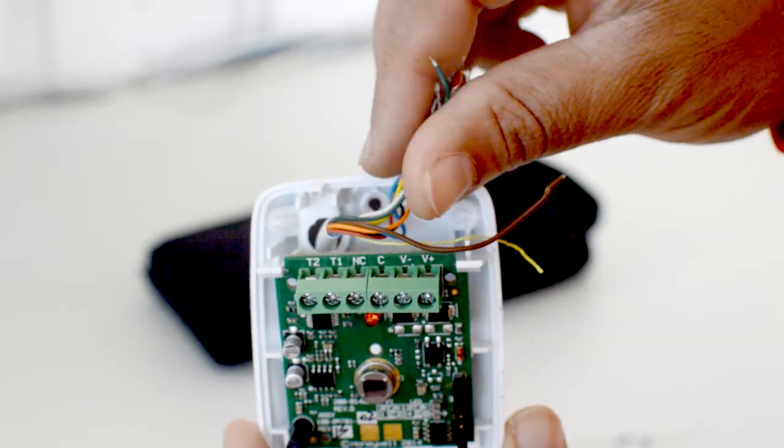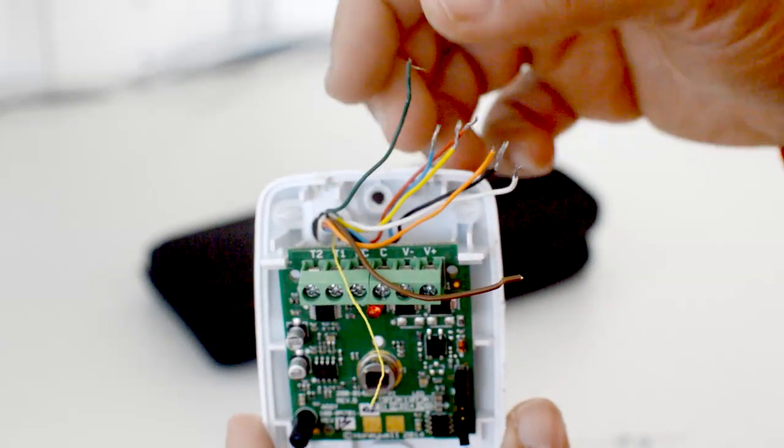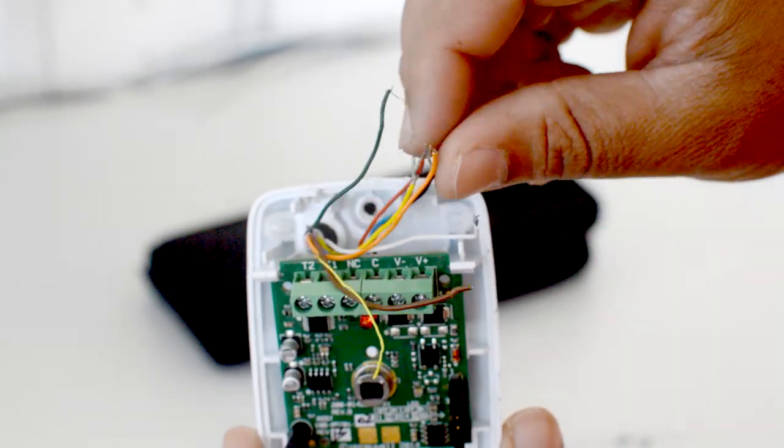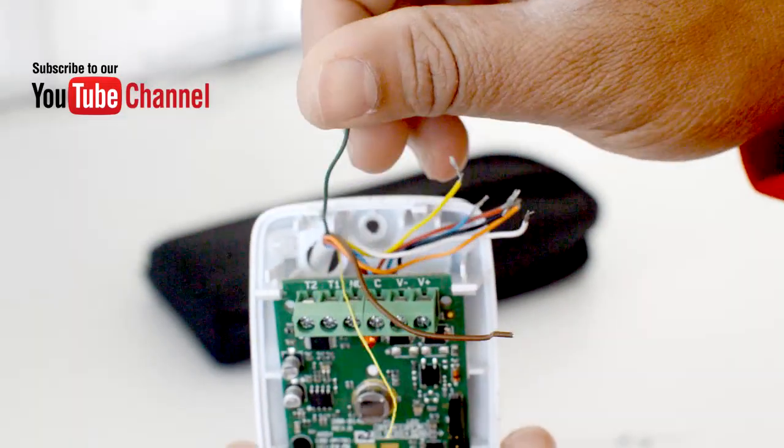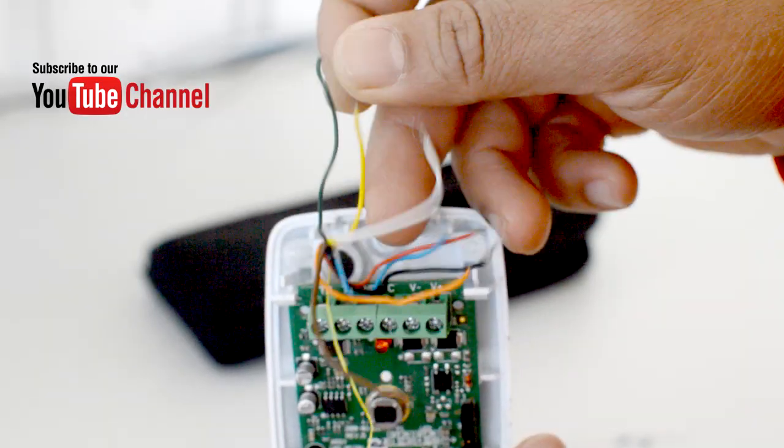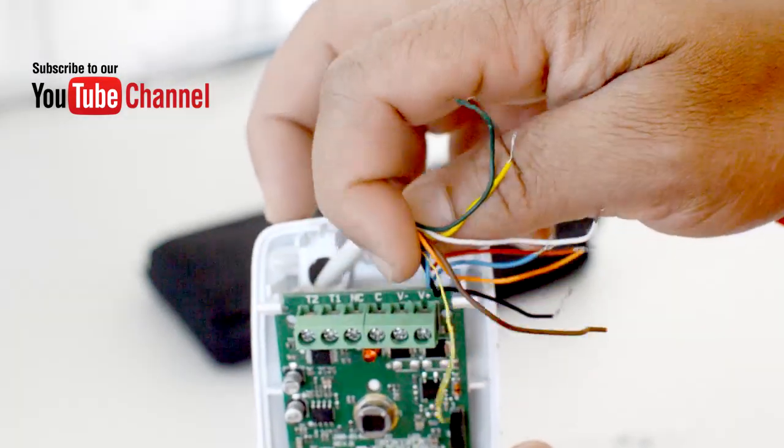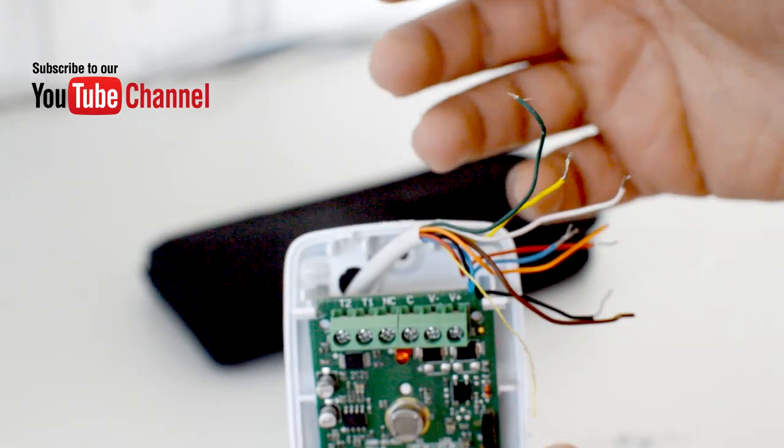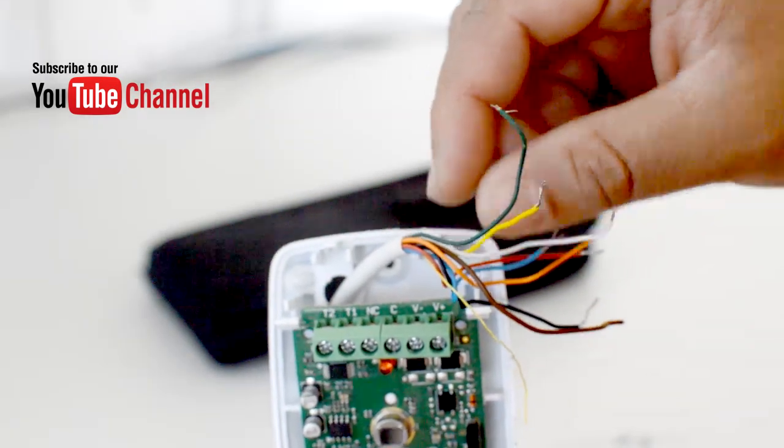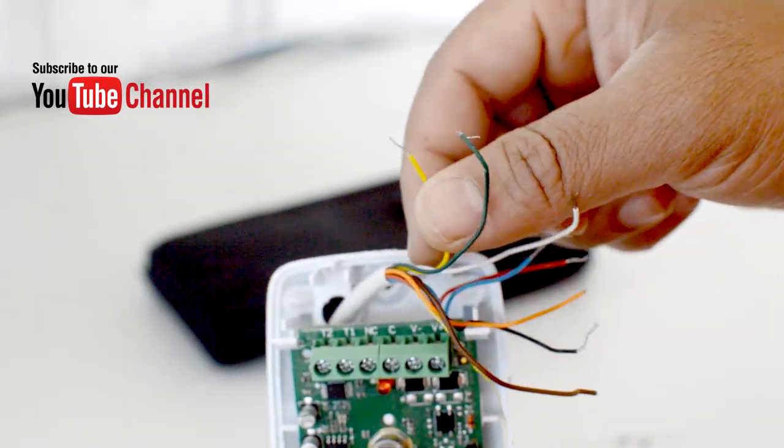What I'm going to do is use the standard colors. I'm going to use red and black for power, and then blue and yellow for my alarm. I'm going to use end of line, so I only need two cables. I'm using the blue one for alarm and the yellow one for tamper.